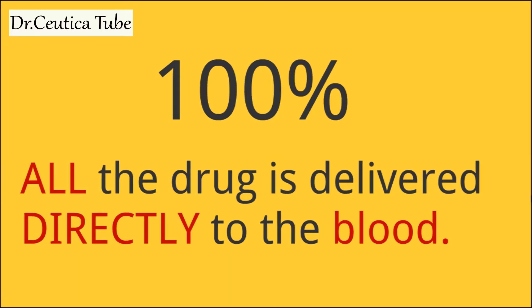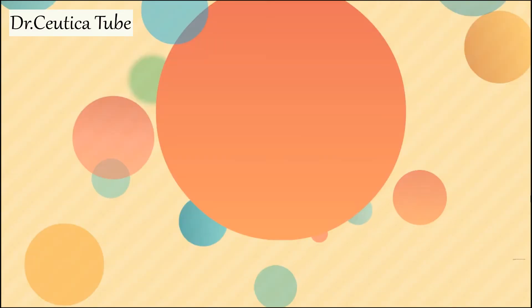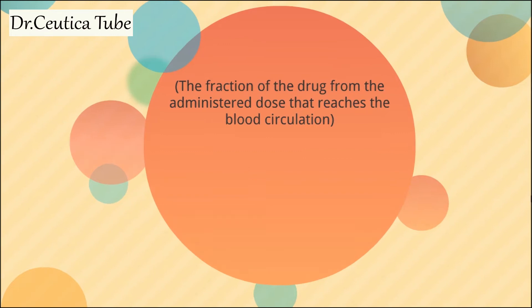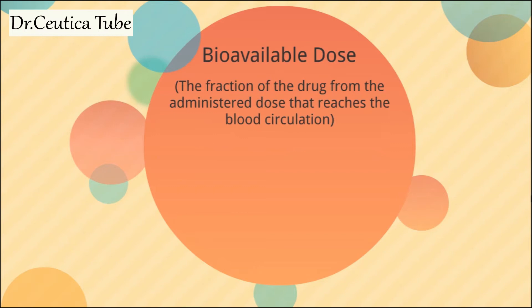However, if the same drug is taken through any other route, there is no guarantee that all of it will reach the general circulation. The fraction of the drug from the administered dose that reaches the blood circulation intact is called the bioavailable dose. That dose reflects the amount of the drug reaching the systemic circulation, and together with the rate at which that happens, they define the bioavailability. So bioavailability is the rate and extent of drug absorption.